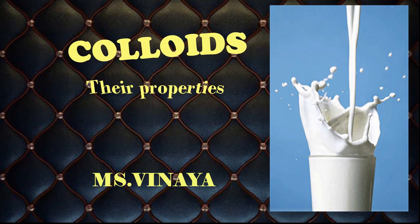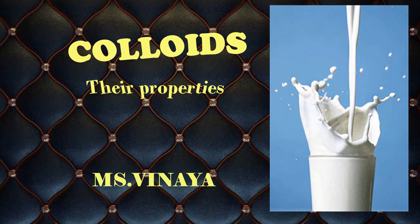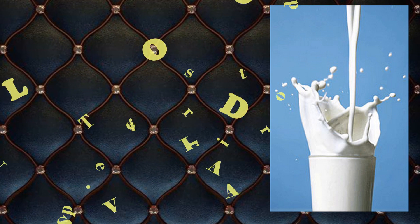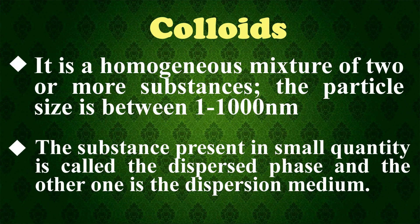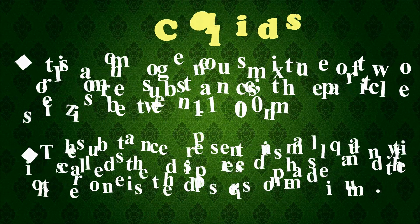Hello everyone, today we will be discussing colloids and their properties. Colloids are a homogeneous mixture of two or more substances. The particle size is between 1 to 1000 nanometers, where 1 nanometer means 10 raised to minus 9 meters. The substance present in small quantity in a colloid is called the dispersed phase, and the one present in large quantity is called the dispersion medium.